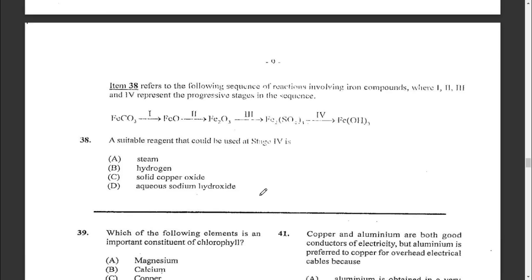Item thirty-eight refers to a sequence of reactions involving iron compounds, where stages one through four represent progressive steps. A suitable reagent that could be used at stage four is aqueous sodium hydroxide.